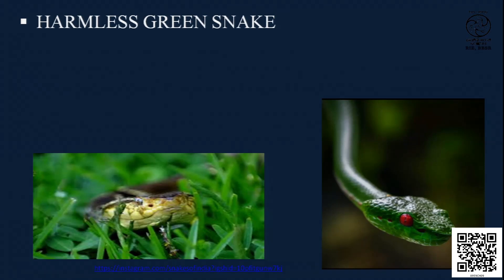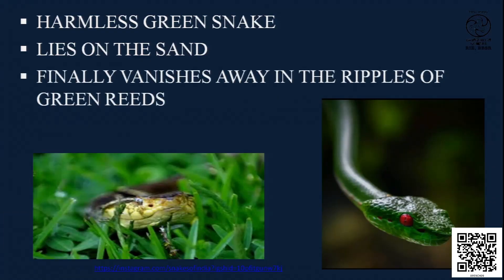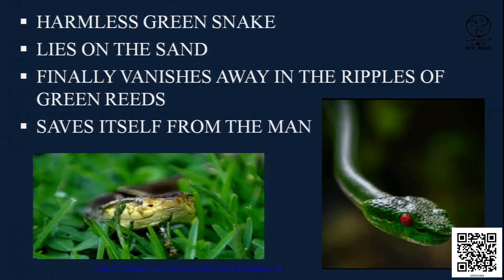It is a harmless green snake. You can make out from the picture how graceful it is — the eyes are just shining, and the kind of glaze and shine on the scales is remarkable. You can see how it is hiding and peeping from the reeds. Sometimes you will find them lying on the sand. Finally, it vanishes away in the ripples of the green reeds — it's a marshy area with some water — and manages to save itself from the man who was planning to hit it with the stick.